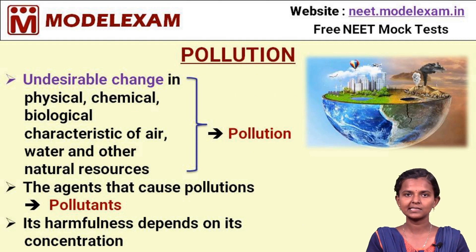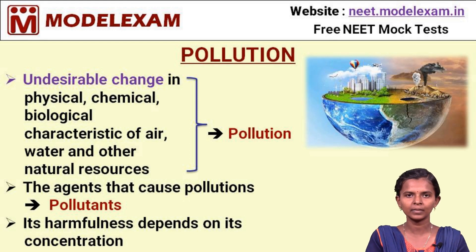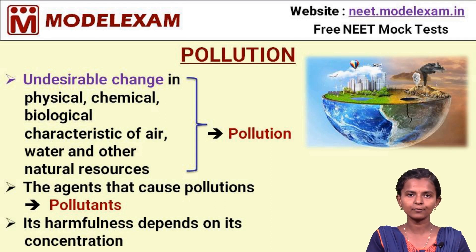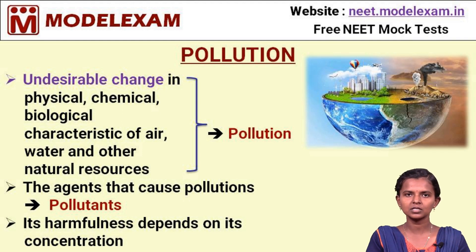The definition of pollution is the undesirable change in physical, chemical and biological characteristics of air, water, soil and other natural resources. The agents that cause pollution are called pollutants. Their harmfulness depends on the concentration and the amount consumed. This is how pollution acts on natural resources and also on organisms living on Earth.